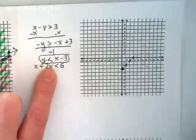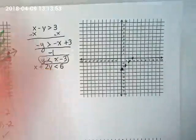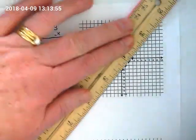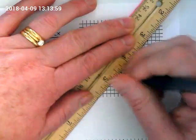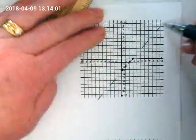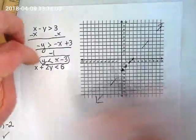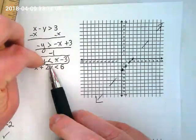Is it going to be a solid or a dash line? A dash. A dash. And is it going to be under or over for shading? Under.